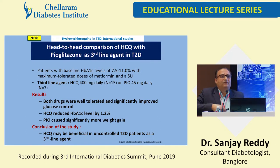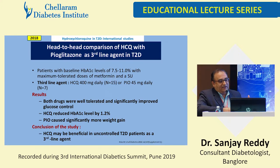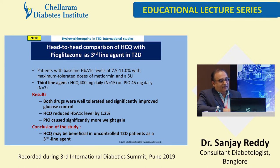As a third-line drug when you have two drugs failing, can we compare HCQ with an already existing molecule like pioglitazone? This study was done in patients on maximum tolerated metformin and sulfonylurea — one arm added pioglitazone and the other arm added HCQ. Results showed that HCQ reduced A1C levels by 1.2%. Both drugs were well-tolerated and significantly improved glucose function. Pioglitazone caused more weight gain, as known. HCQ can be beneficial in uncontrolled type 2 diabetes as a third-line agent.